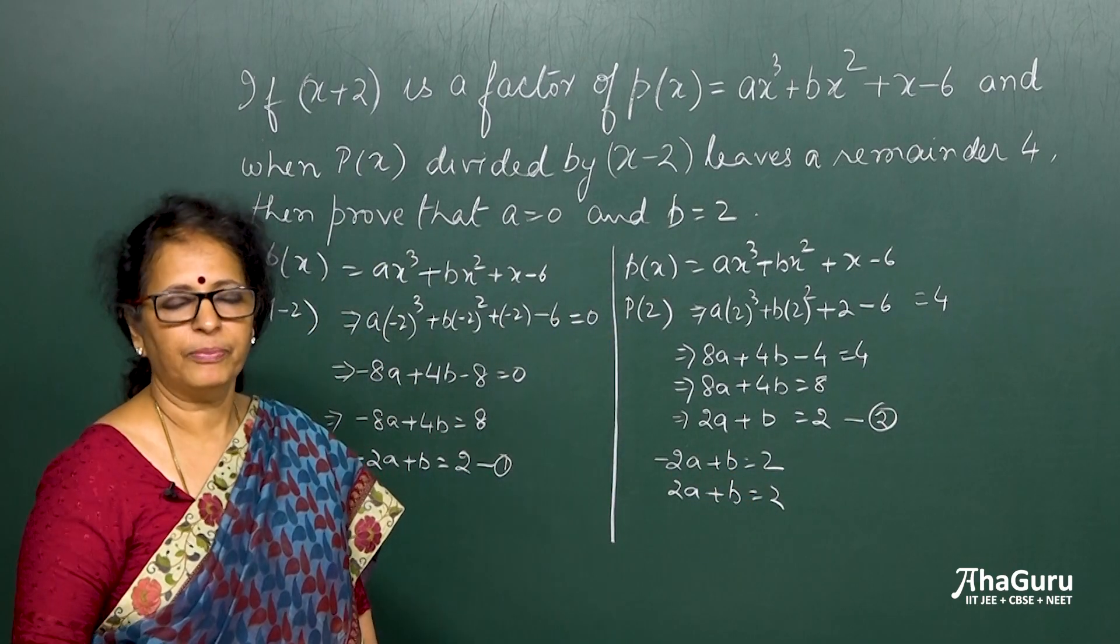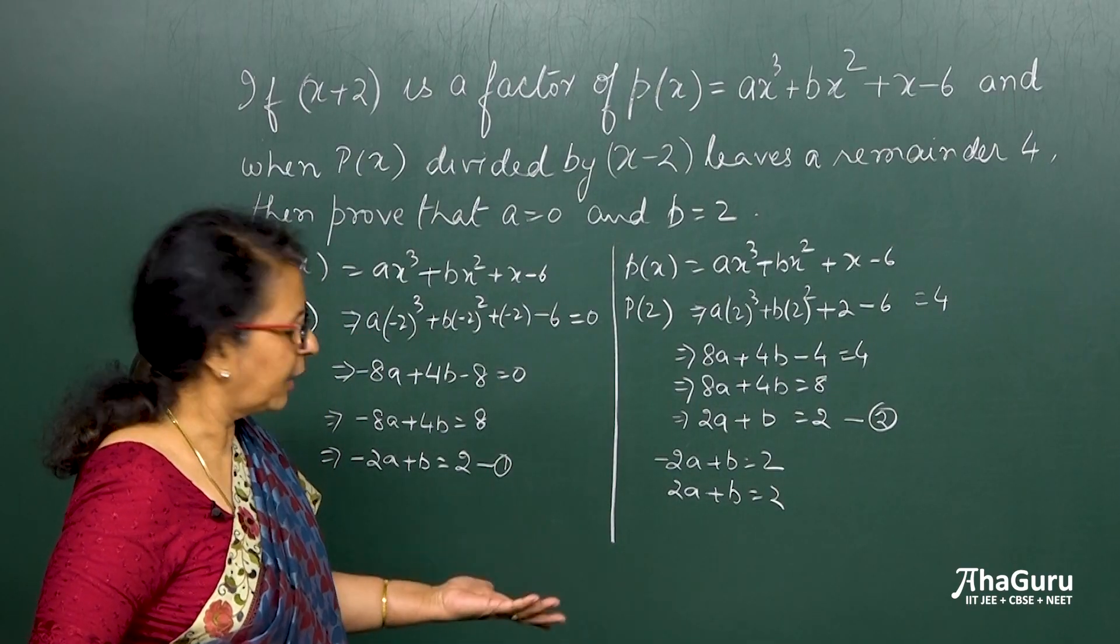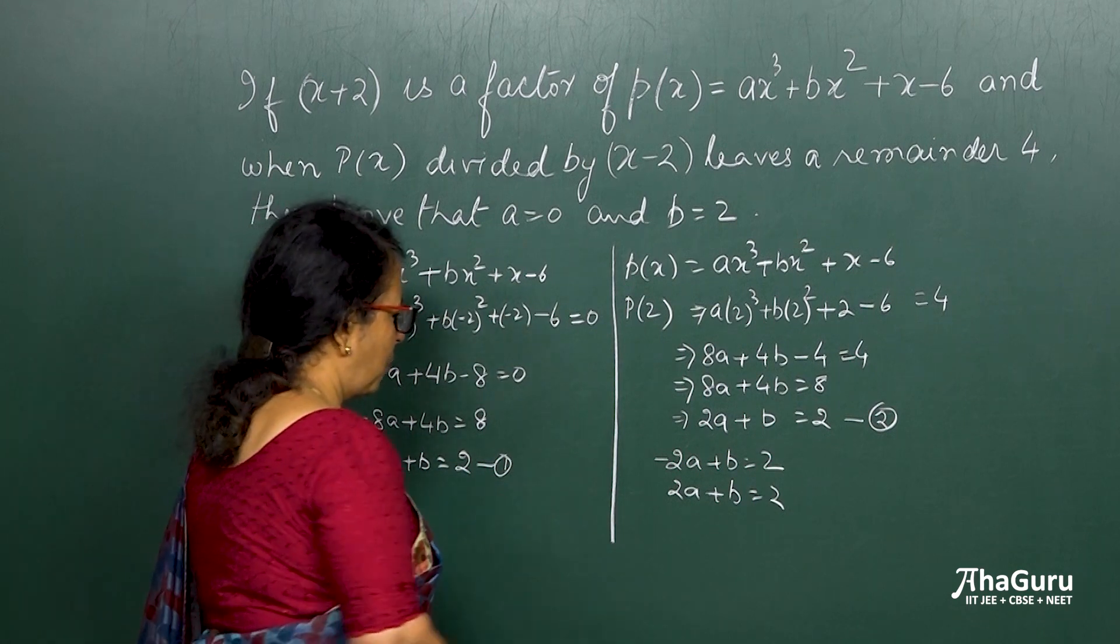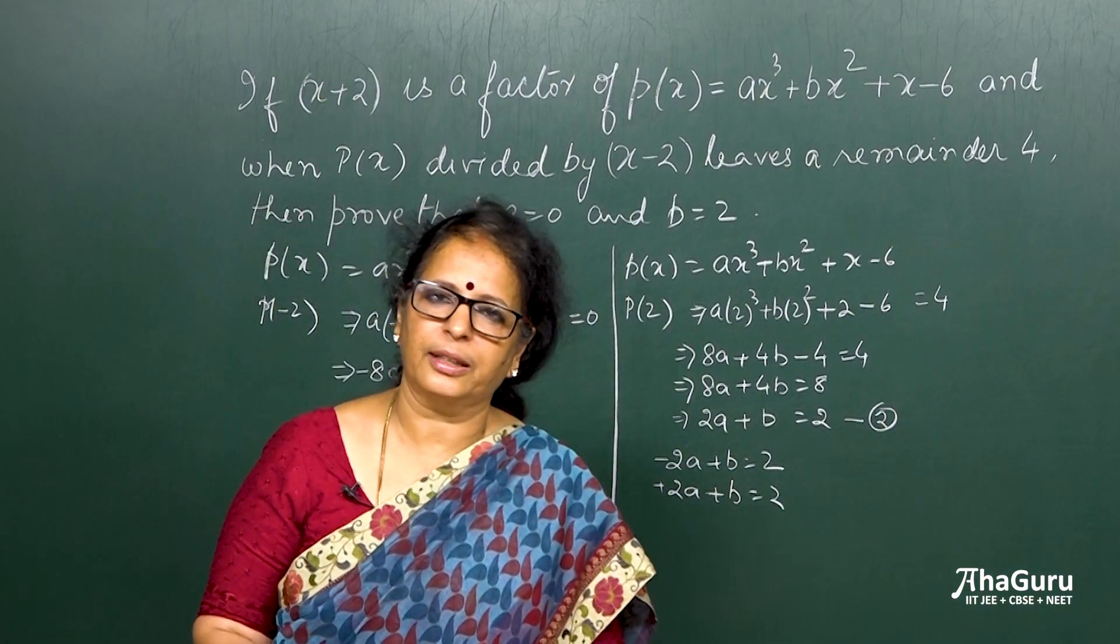So the first one is minus 2a plus b, the second one is plus 2a. These are the two equations. You can eliminate any variable of your choice first. So if I want to eliminate a, the coefficients are with opposite sign.